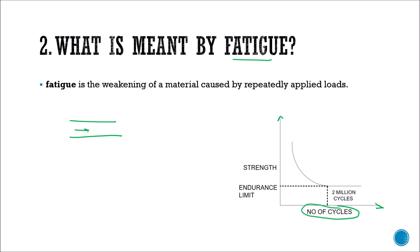What is meant by repeated load? Take a road with vehicles continuously running over it. The road will be subjected to both loading and unloading — loads are placed and then removed. This type of loading is called cyclic loading. On the graph, the number of cycles is plotted on the X-axis and strength on the Y-axis. As the cycle count increases, the strength of the concrete or member decreases, but it reaches a constant value at a certain point.